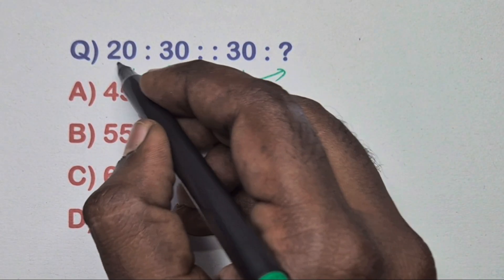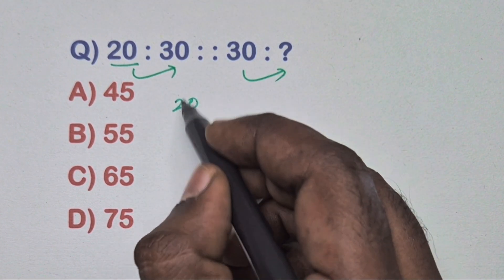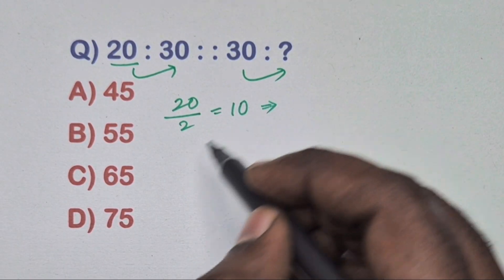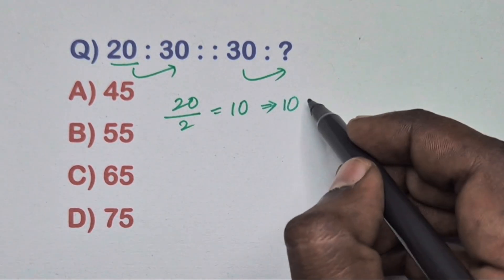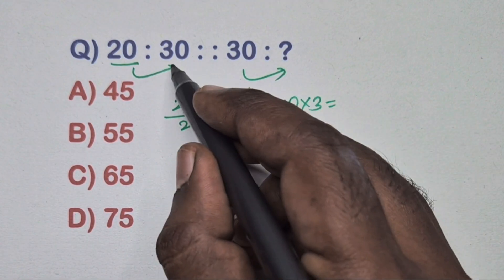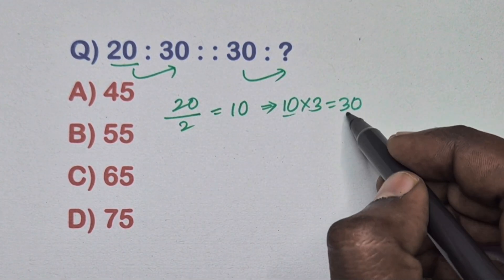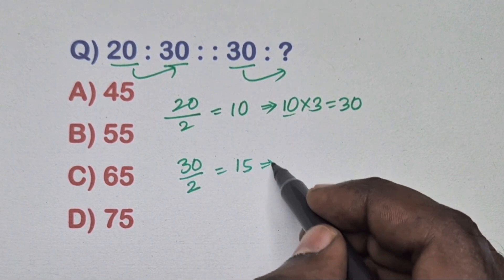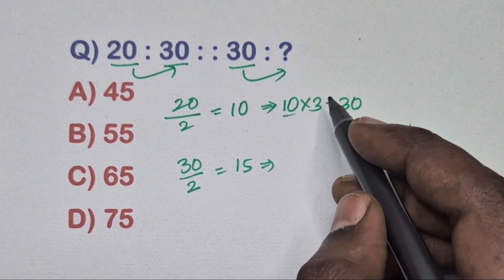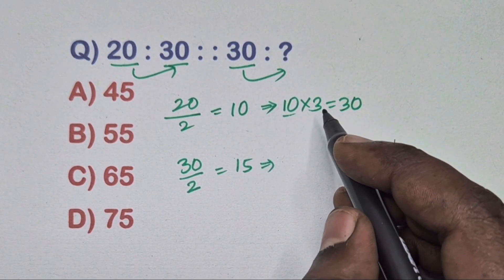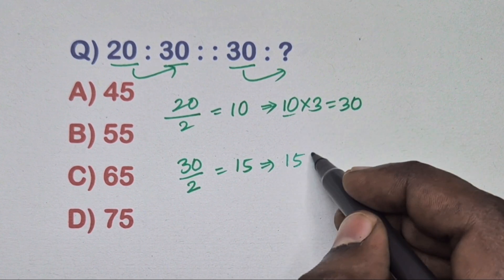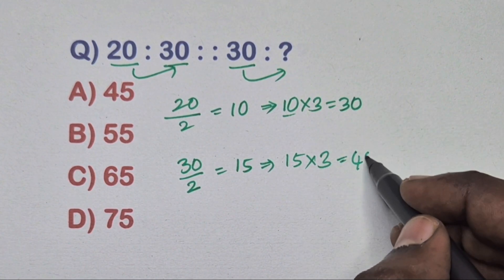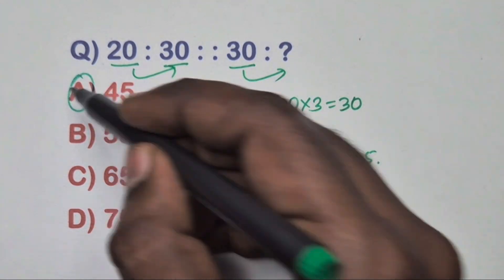Find the relation between this pair. Take 20: half of 20 is 10. Then 10 × 3 = 30. Take 30: half of 30 is 15. Same way, 15 × 3 = 45. So the answer is option A.